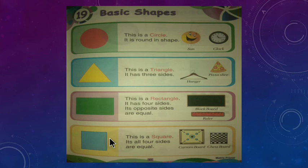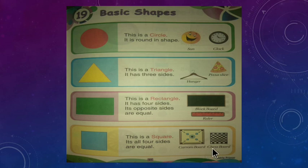You can see the examples. Carrom board — jo hamaare carrom board hoti hai students, woh square shape mein hoti hai, aur uske chaaro sides equal hoti hain. And the chess board — jo hamaare chess board hoti hai woh bhi square shape mein hoti hai.